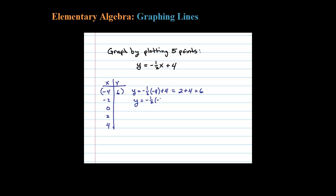Continuing, -½ times -2 plus 4: that -½ times -2 is positive 1, 1 plus 4 is 5. Next, -½ times 0 plus 4: 0 times anything is 0, so that just gives me 4. That's going to be the y-intercept.